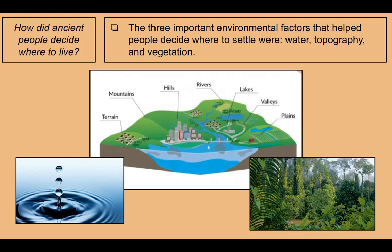First question: how did ancient people decide where to live? There were three important environmental factors that helped them decide where to settle, and those three things were water, topography, and vegetation.